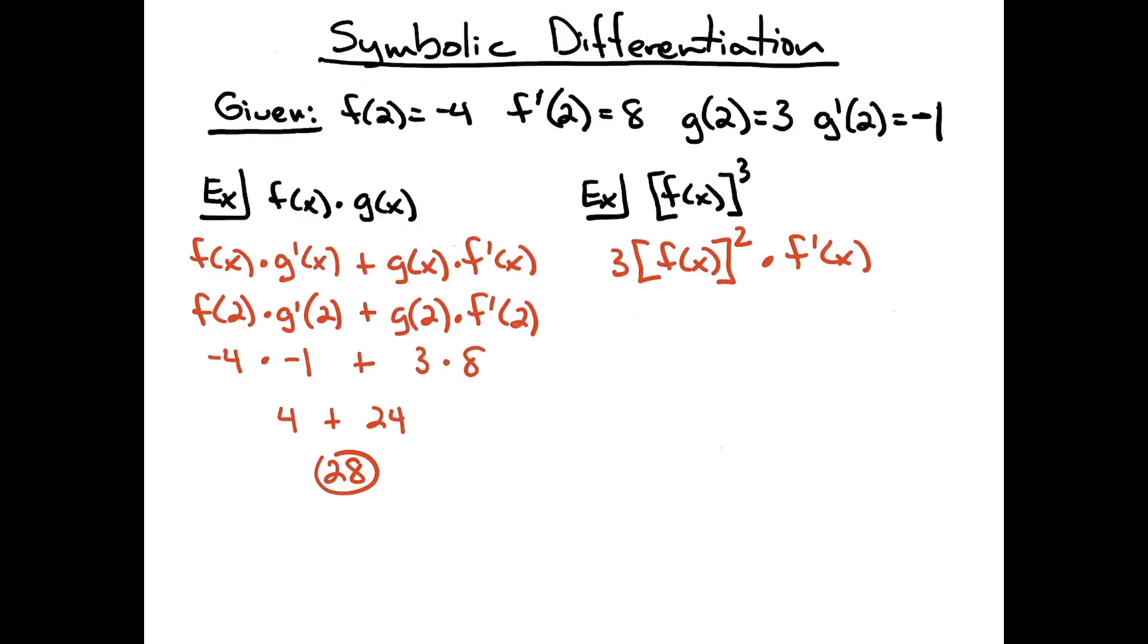Now I want to find that derivative at x equals 2. So I'm going to do 3 times f of 2, and then squared times f prime of 2. Now I'm going to plug in the values that I have been given.